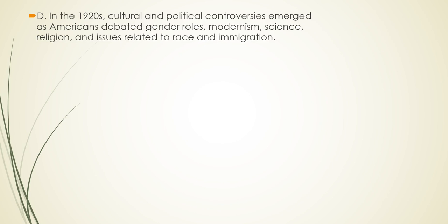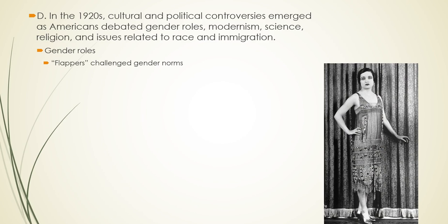In the 1920s, cultural and political controversies emerged around gender roles, modernism, science, religion, and issues related to race and immigration. Women — especially young, middle-class, urban women — were challenging gender roles. Flappers are an example: young women who drank, danced, smoked, went on unchaperoned dates, wore makeup, and cut their hair short, challenging traditional female gender stereotypes.